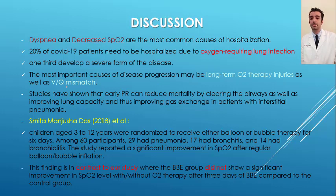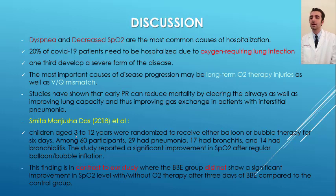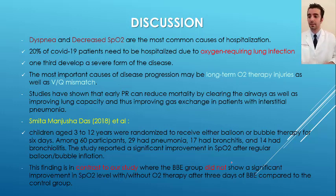Studies have shown that early pulmonary rehabilitation can reduce mortality by clearing the airways and improving lung capacity, thus improving gas exchange in patients with interstitial pneumonia. In a study by Sunita Manjusha Das and colleagues in 2019, children aged 3 to 12 years were randomized to receive either balloon or bubble therapy for six days. Among 60 participants, 29 had pneumonia, 17 bronchitis, and 14 bronchiolitis. The study reported a significant improvement in SpO2 after regular balloon or bubble inflation — in contrast to our study, where the BBE group did not show significant improvement in SpO2 after three days compared to the control group.